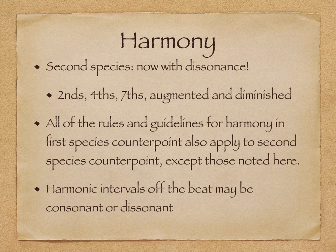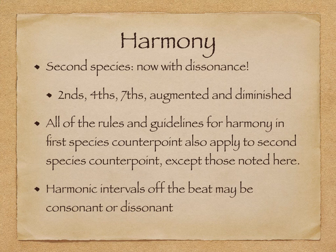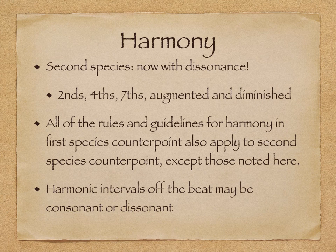The harmony of second species now includes dissonance. This means that seconds, fourths, sevenths, and their compound equivalents, as well as augmented and diminished intervals, are now allowed in the harmony. Aside from the inclusion of dissonances, all of the rules and guidelines for harmony in first species counterpoint also apply to second species counterpoint.